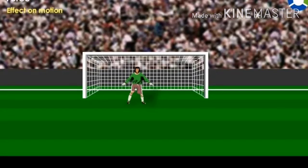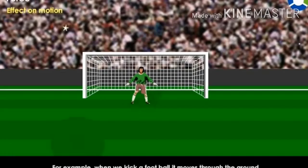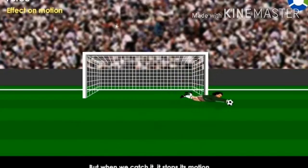Effect on motion. A force can make a body move and can stop a moving body. For example, when we kick a football, it moves through the ground. But when we catch it, it stops its motion.